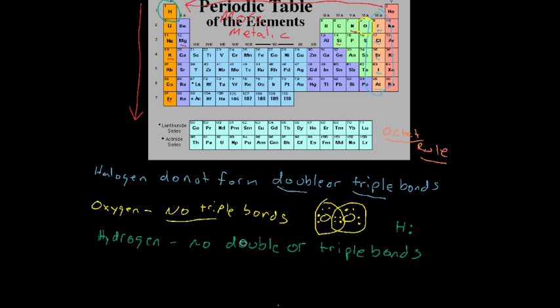Generally, whenever you're writing out Lewis dot structures, your central atom, the thing that you connect all your other bonds around, is going to be the most metallic atom. Well, sometimes that's not always the case with everything, but generally, it's the most metallic atom.